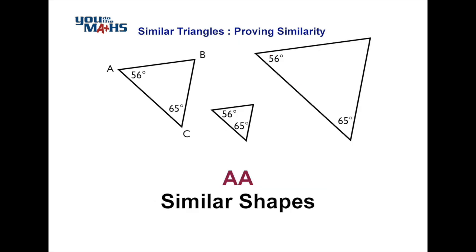There's no need to state it as angle-angle-angle — that is, three pairs of angles — because in any triangle, if two pairs of angles match, the third pair must also match. The two angles together with the third must add up to 180 degrees, so the third will always be the same. There's no need to state it because it must add up to 180 degrees in both triangles.